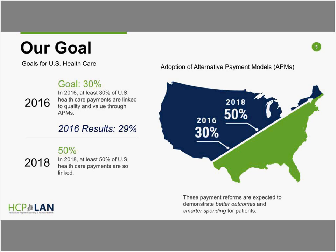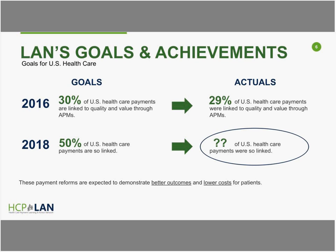HHS under the previous administration set a goal of tying at least 30% of Medicare fee-for-service payments to quality or value through alternative payment models by 2016, and at least 50% by 2018. The results of our 2016 measurement effort based on 2015 data showed that approximately 25% of payments from survey respondents are in APMs. On October 30th, we saw the results of the 2017 measurement effort based on 2016 data, which showed an increase in the percentage of payments falling in categories 3 and 4 to 29%. Last year we just fell short of achieving our 2016 goals for adoption. This measurement effort will show us how close we'll be to achieving our goals for 2018, which will be surveyed in 2019.